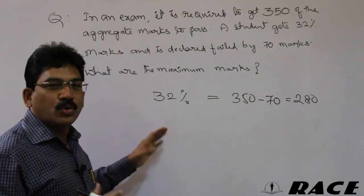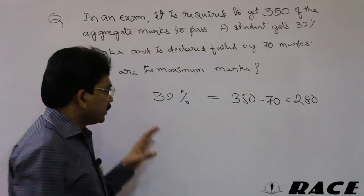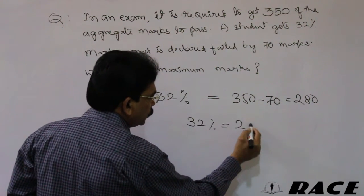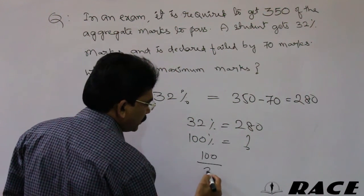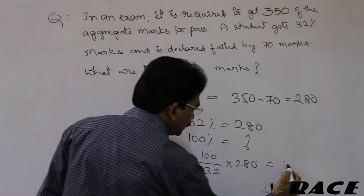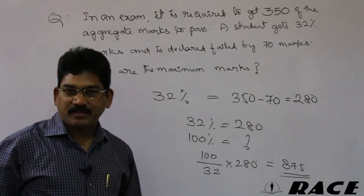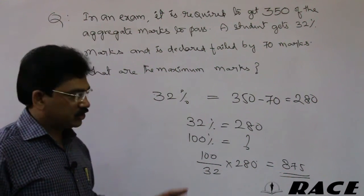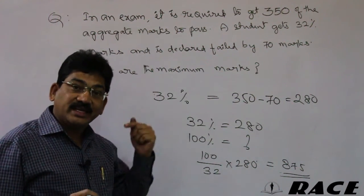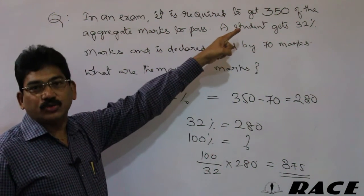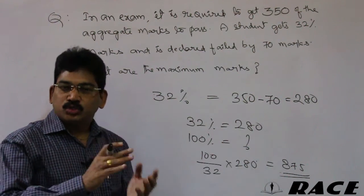The student got 32 percent, which equals 280 marks. Total marks is always 100 percent. So 100 percent = (100/32) × 280 = 875 marks. The total maximum marks of the examination is 875. Understand: passing marks are 350, student scored 70 less = 280, and 32% = 280, so solve accordingly.